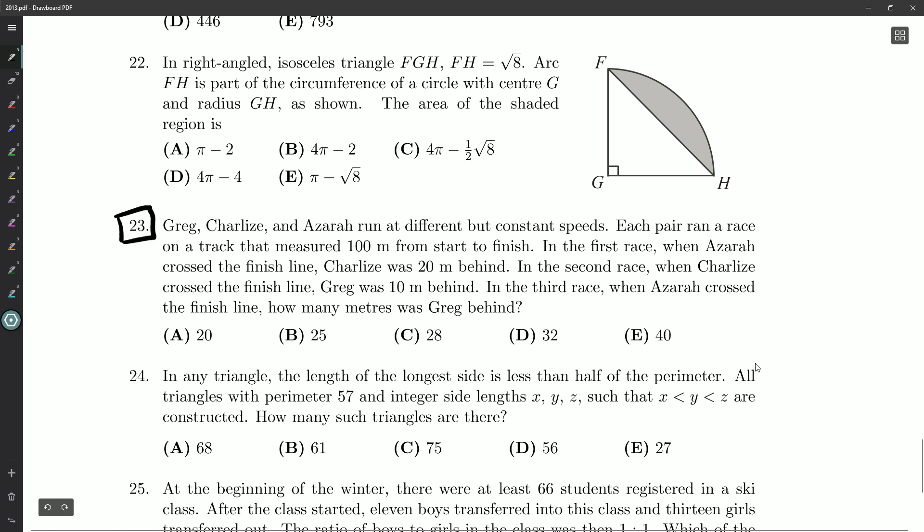Greg, Charlize, and Azra run at different but constant speeds. Each pair ran a race on a track that measured 100 meters from start to finish. In the first race, Azra crossed the finish line, Charlize was 20 meters behind. In the second race, when Charlize crossed the finish line, Greg was 10 meters behind. So we can see Azra is faster than Charlize, and Charlize is faster than Greg. So when the final pair, Azra and Greg run, Azra will finish first, right? Well, in the third race, when Azra crossed the finish line, we want to know how many meters behind Greg was.